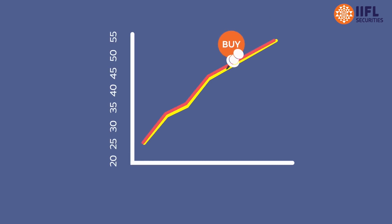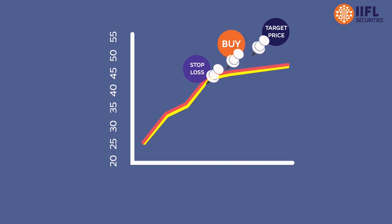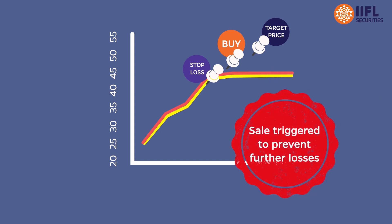For example, Raj stock 45 rupees per share mein khareed leta hai, with a target price of rupees 47 per share, aur stop-loss placed at rupees 44. Agar stock price increase hone ki jagah decrease ho jaata hai, toh Raj ka loss is limited to rupees 1 per share.